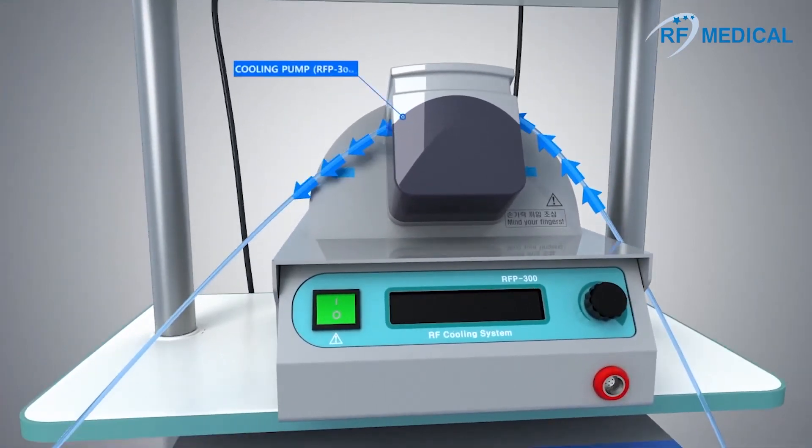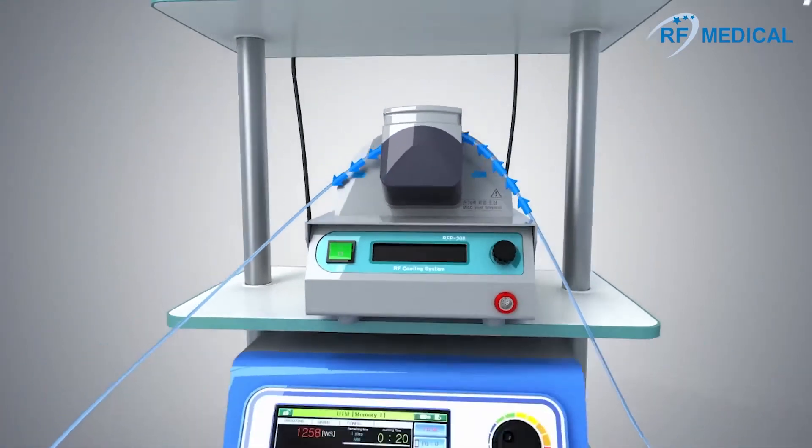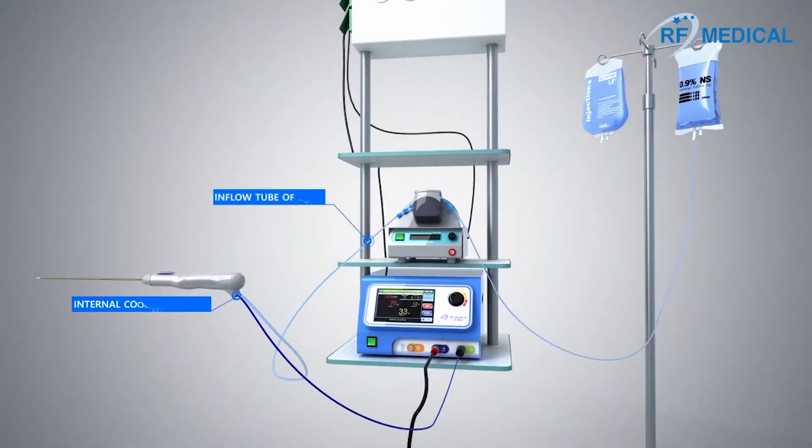The internal cooling of the electrode reduces the temperature of the adjacent tissue in order to prevent carbonization. This allows the emission of energy to achieve a wider ablation zone.